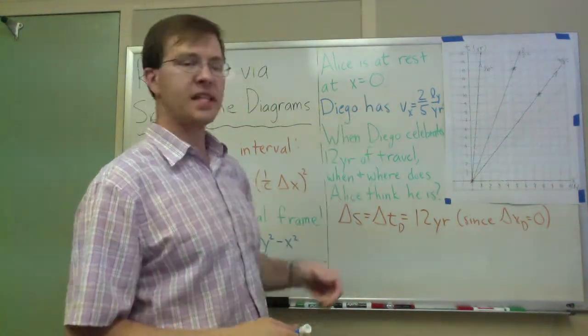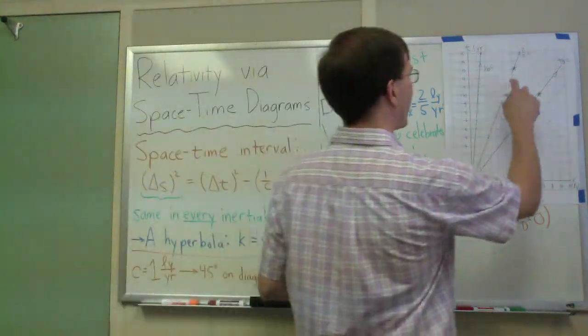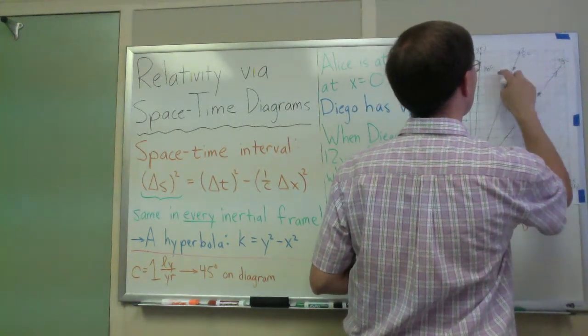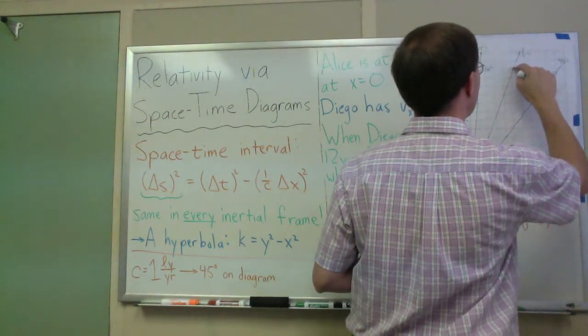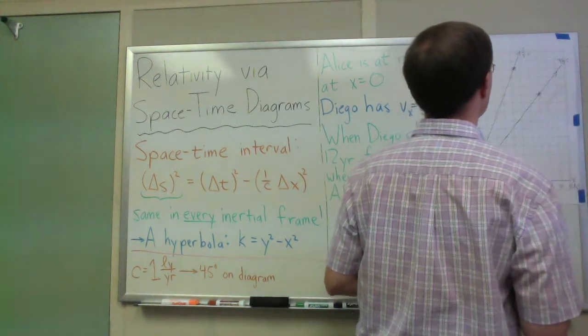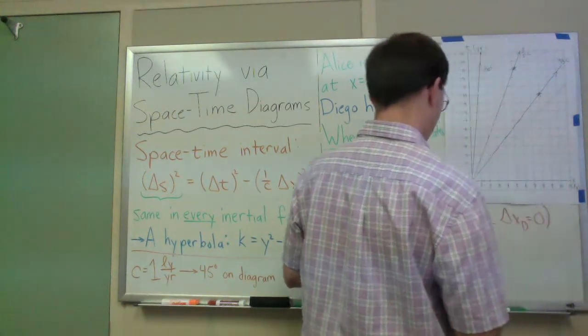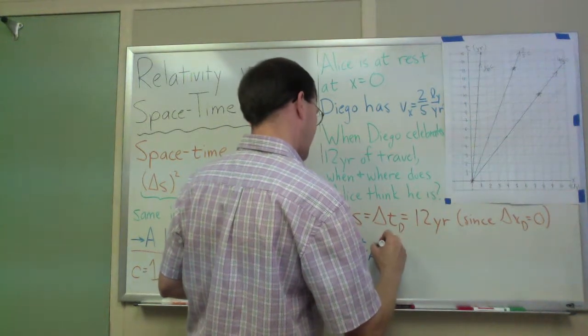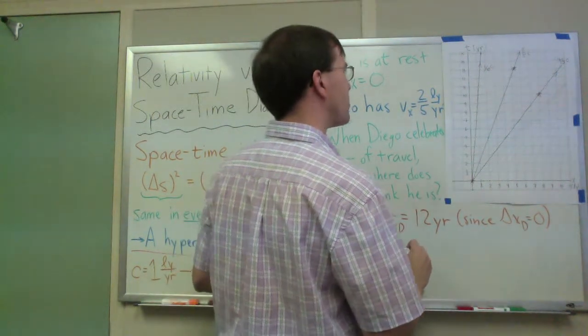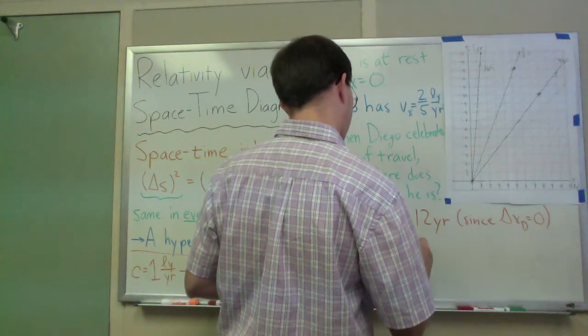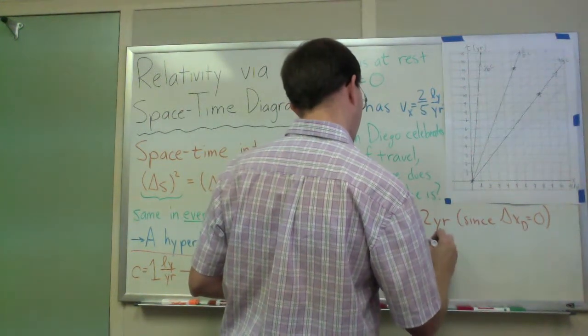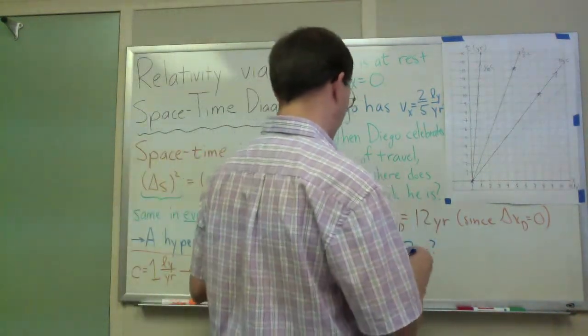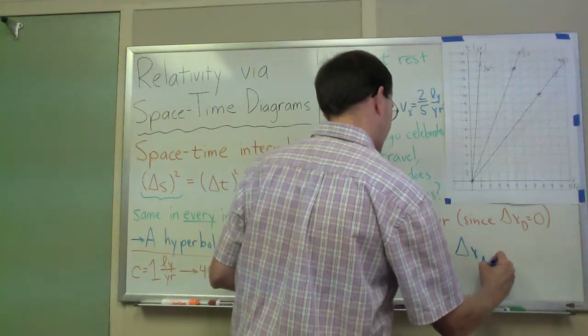Let's take a look. Twelve years have passed for Diego. How long does Alice think has passed? Well, I can just look at that intersection of Diego's line with Alice's coordinates. It's a little bit past the hyperbola that's a little bit past the thirteen, going for thirteen and a half quarter. I'd say maybe delta t Alice, I think, is maybe thirteen point two years maybe. Something like that, thirteen point two-ish. Something in that range.